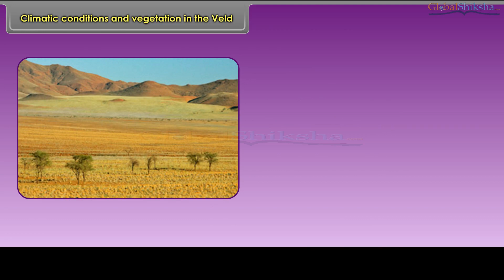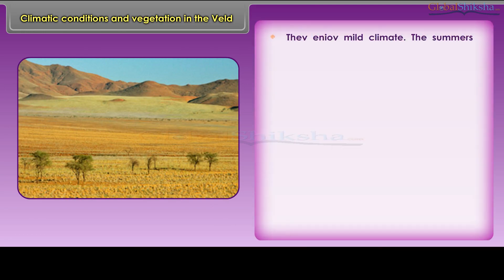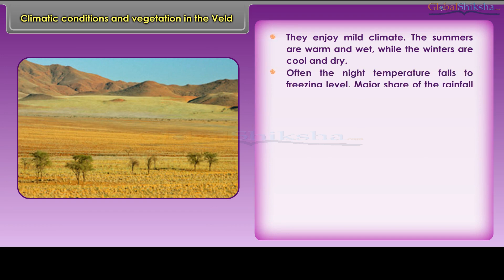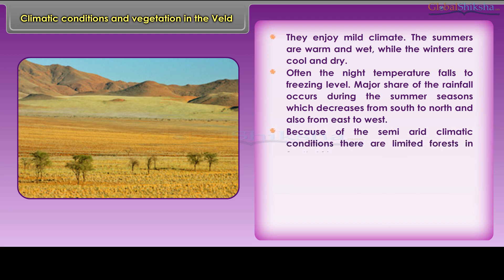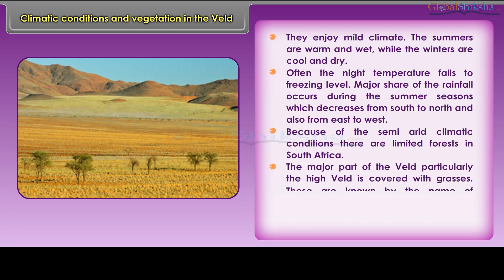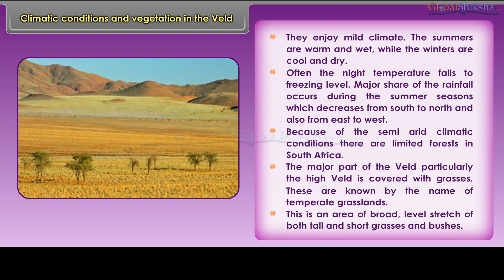The Veld enjoys a mild climate. Summers are warm and wet while winters are cool and dry; often the night temperature falls to freezing level. The major share of rainfall occurs during summer and decreases from south to north and east to west. Because of semi-arid conditions, there are limited forests. The high Veld is covered with grasses, in an area of broad level stretch of both tall and short grasses and bushes.